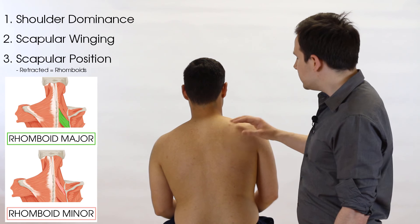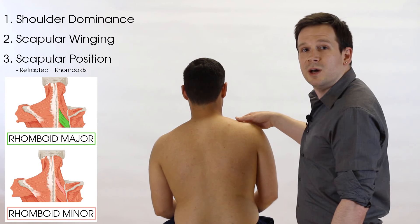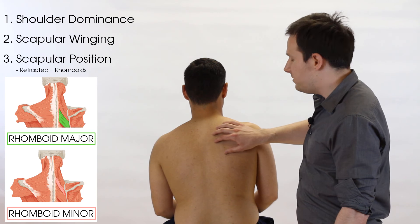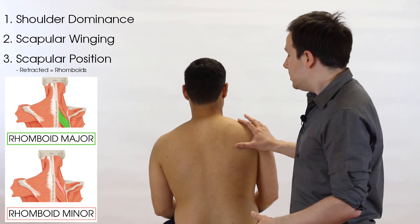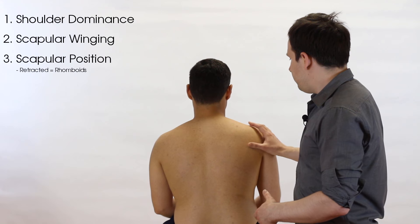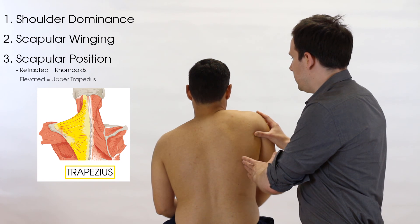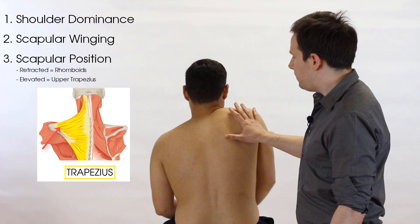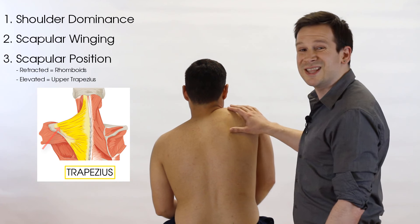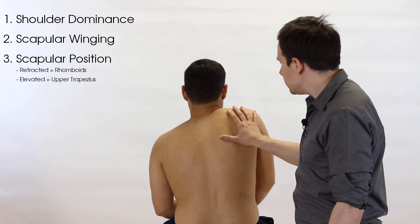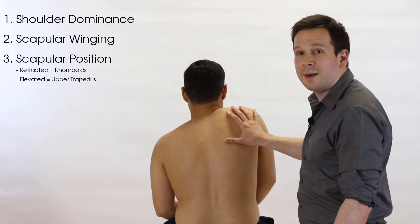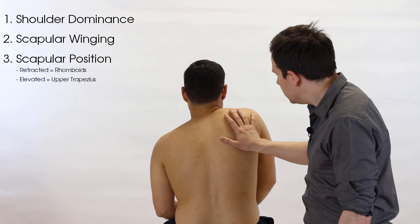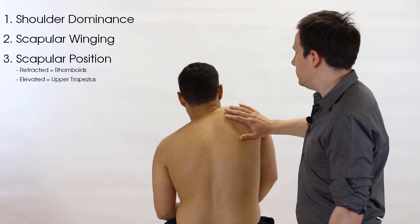Similarly, if the upper trapezius is overactive and the patient is already in an elevated position, they've lost their dynamic ability to recruit the upper trapezius to produce upward rotation — and that would be another clue to consider.